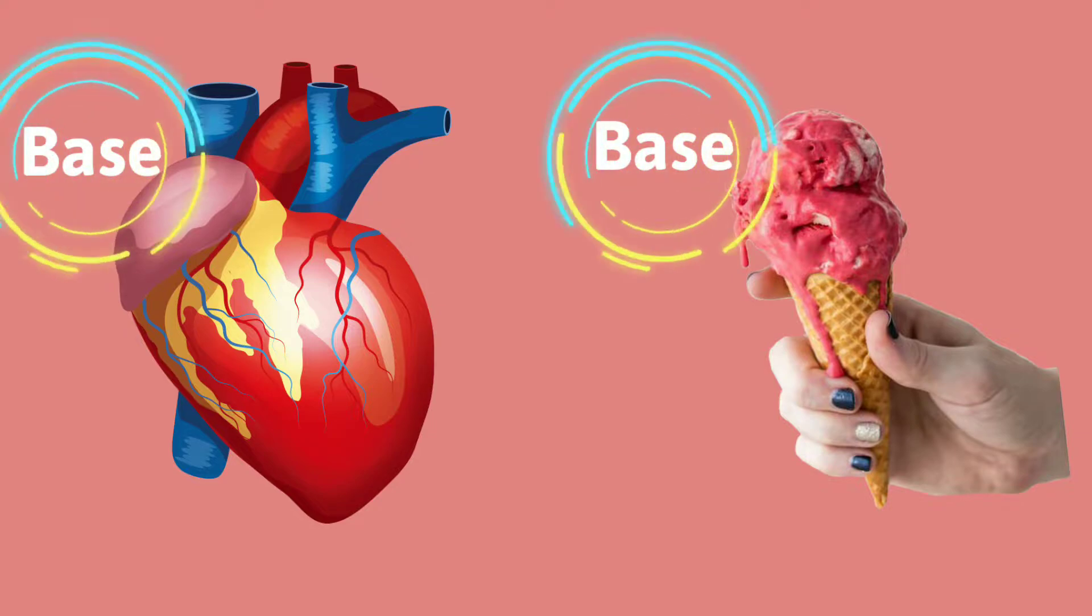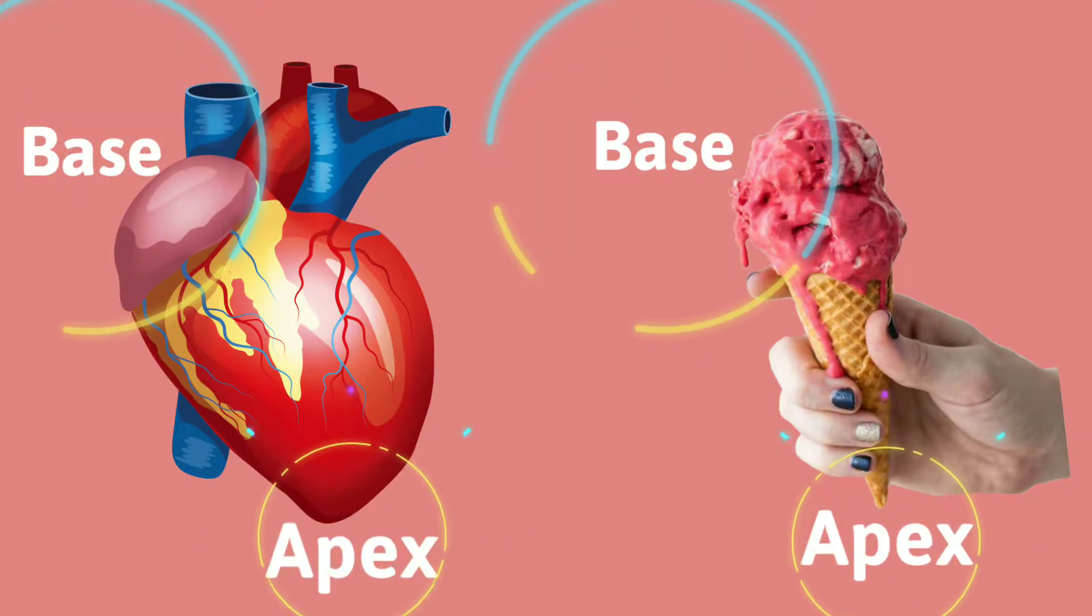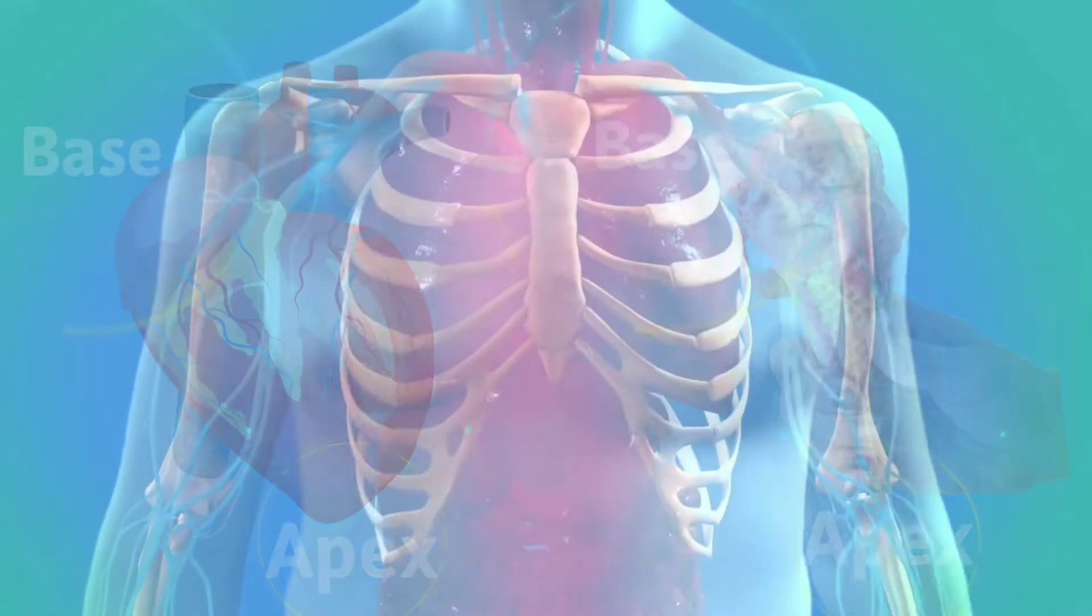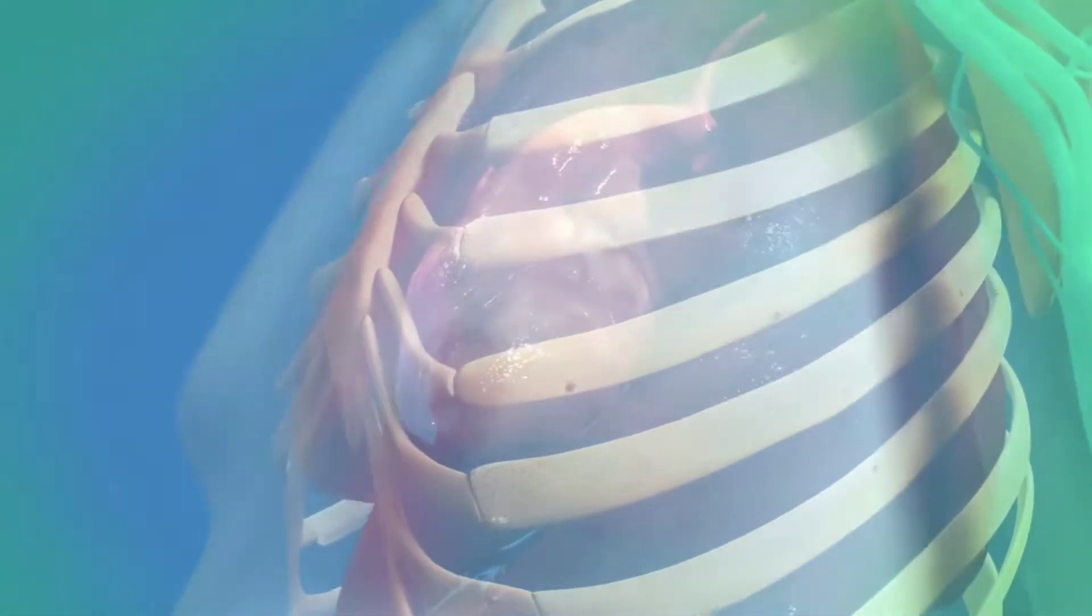The base of the heart, the posterior part, is formed by both atria but mainly the left. The apex is the most inferior, anterior, and lateral part. As the heart lies in situ, the base is located at the level of the third costal cartilage.